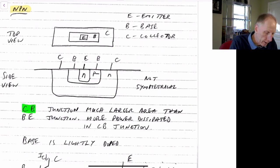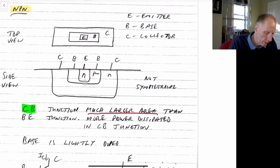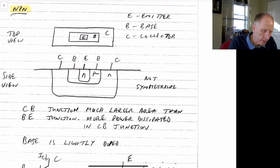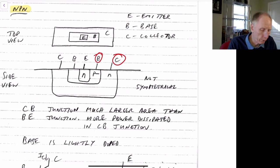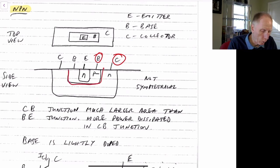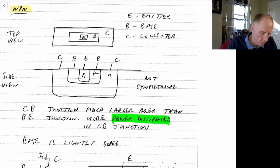The collector-base junction is much larger in area than the base-emitter junction, so we don't have symmetry between the two. In normal NPN operation, the collector voltage is significantly higher than the base voltage, and current flows from the collector through the base to the emitter. With the large voltage drop across the collector-base junction, there's more power dissipation in that region than in the base-emitter region. So it's beneficial to make the collector-base junction larger than the base-emitter junction.